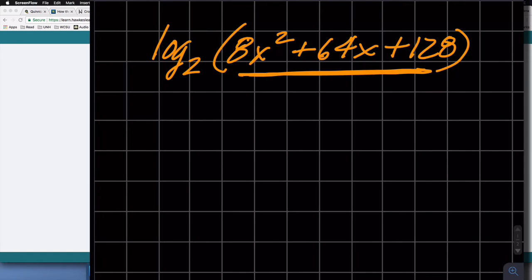I know there are two properties that allow me to change a single logarithm and rewrite it as two logarithms being added, or in the case of the other one, subtracted. So this one I know is going to end up being an add situation because I'm going to have the product of two factors.